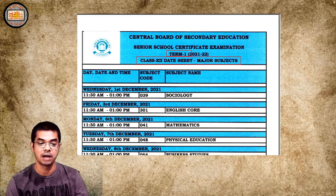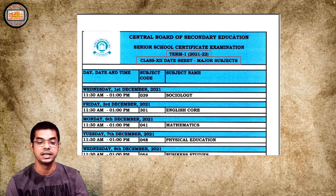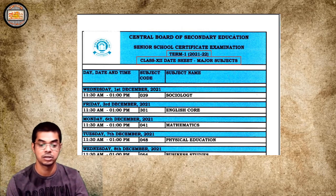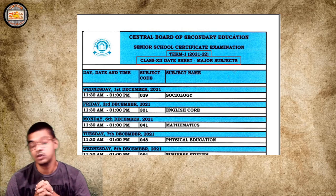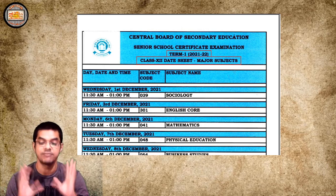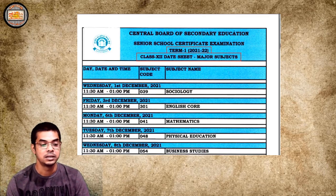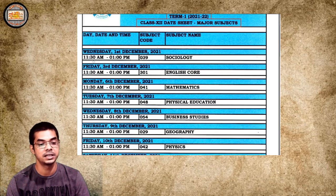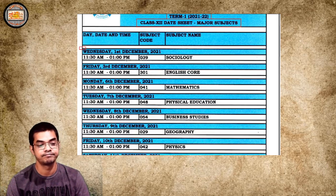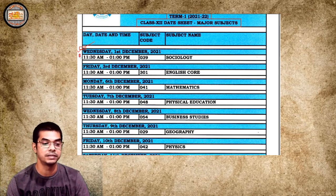That's very vital — it's Term 1 of 2021-22. I won't waste time discussing what Term 1 and Term 2 are. The most important thing is that the date sheet itself has been published. Major subjects start from Wednesday, 1st December 2021. The time chosen by CBSE is very important — 11:30 AM to 1:00 PM.